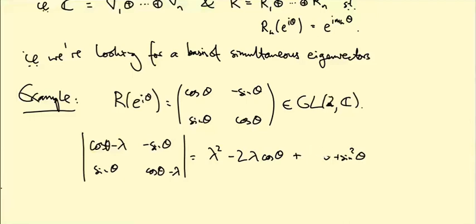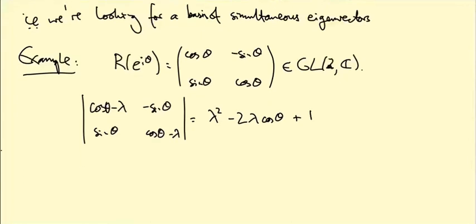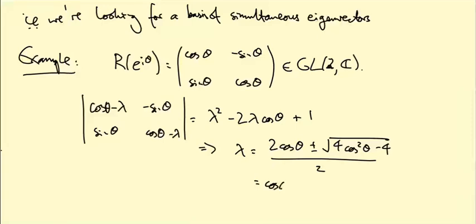Well, the cos and the sine, when you square them and add them, you get one. So λ has to be (2 cos θ ± √(4 cos² θ - 4))/2. And that turns out to be cos θ ± i sin θ. In other words, that's e^{±iθ}.